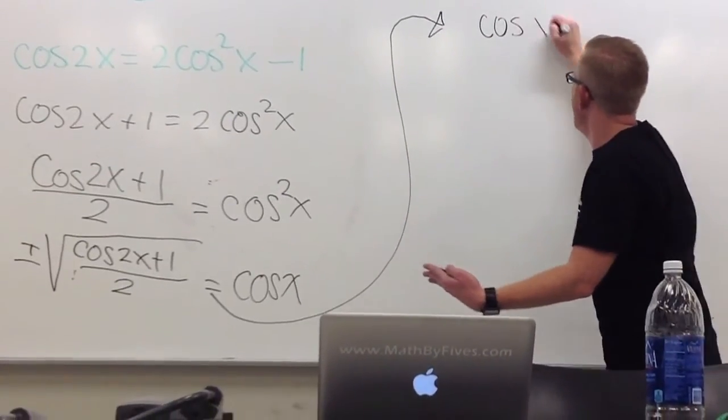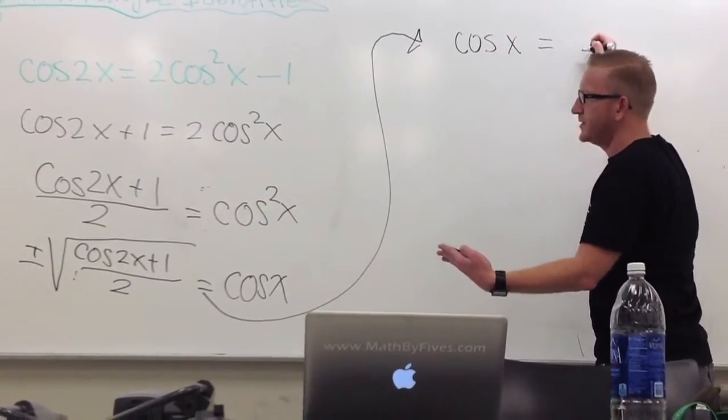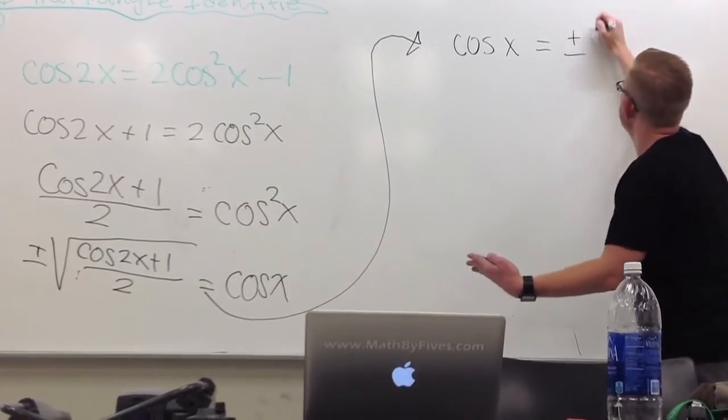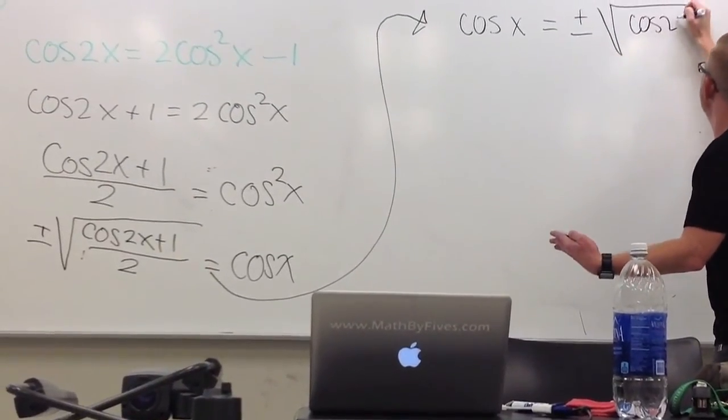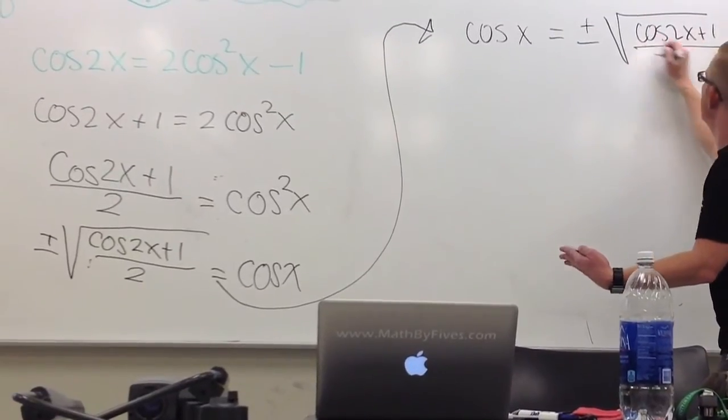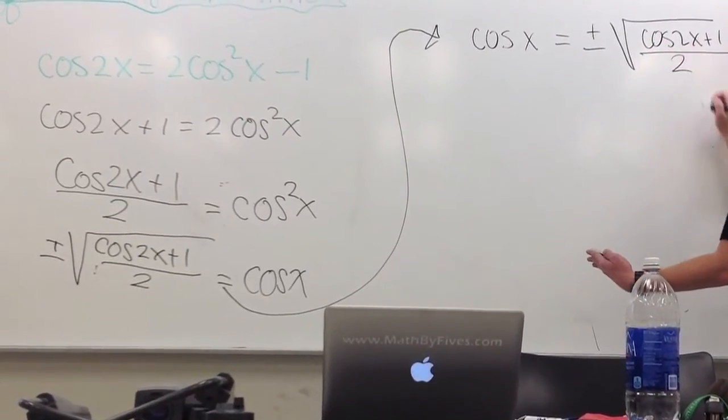I have the cosine of x and that's equal to, wait for it, plus and minus the square root of the cosine of 2x plus 1 all over deuces.